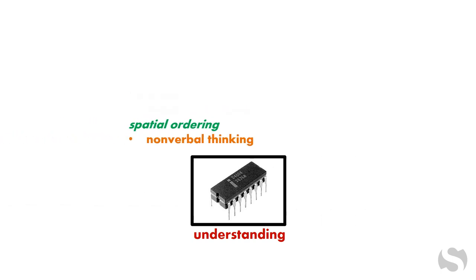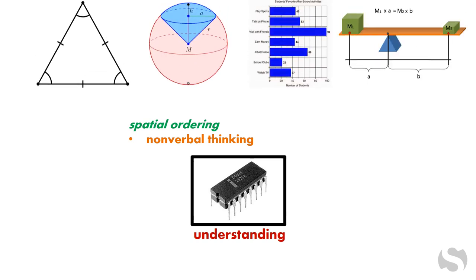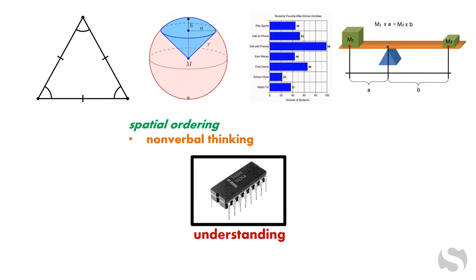Spatial ordering refers to visual or nonverbal thinking without words. This includes interpreting and generating material like graphs, charts, and drawings. Spatial ordering is particularly important in math, such as geometry, and some science classes, like physics.